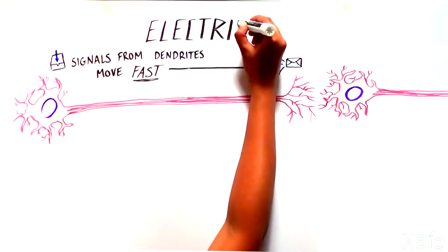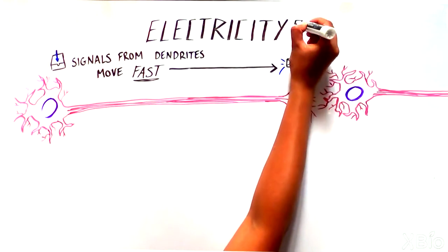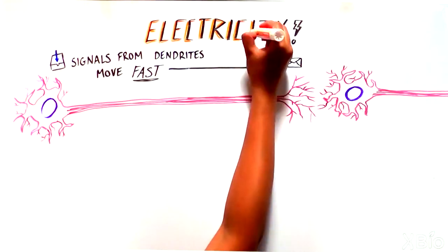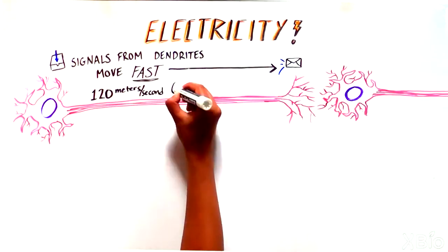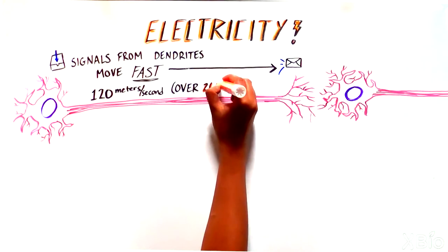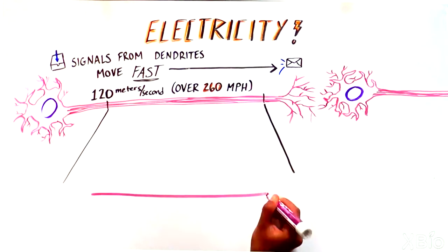The answer is electricity. Neurons are able to generate electrical signals that can rapidly travel through the cell, sometimes up to 120 meters per second, which is over 260 miles per hour.